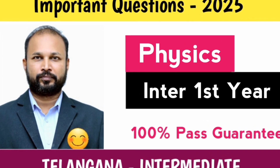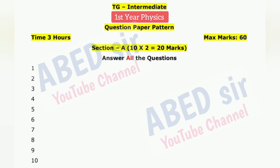Before that, let me explain the question paper pattern. This question paper has 3 hours exam duration and maximum marks is 60. This question paper has 3 sections. In Section A, short questions will be asked. Total 10 questions will be asked and you have to answer all 10 questions. Each one carries 2 marks, so you will get 20 marks from Section A.